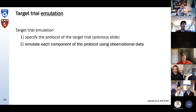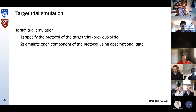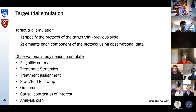So now target trial emulation. Target trial emulation is nothing more or less than first specifying the protocol of the target trial, and then emulating each component of the protocol using observational data. The observational study basically needs to appropriately emulate all of those components. The most important part is to properly emulate the design of a randomized trial in observational data — otherwise, results will be biased with immortal time bias or depletion of susceptibles bias.